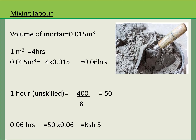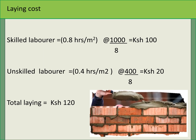For mixing labor: the volume of mortar is 0.015 meter cubed. If it takes four hours to mix one cubic meter of mortar, it will take 0.015 × 4 hours for the unskilled laborer to mix this mortar. We are paying the unskilled laborer 400 shillings in eight hours, so we multiply by the cost per hour. This gives us approximately 3 shillings for mixing cost per meter squared.